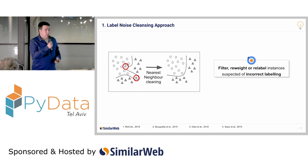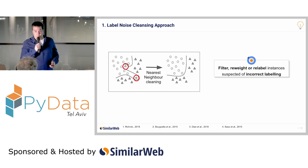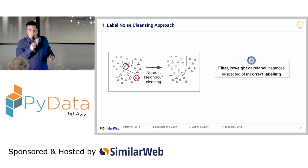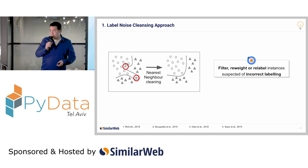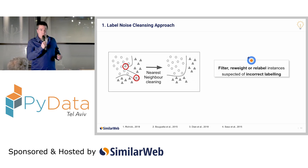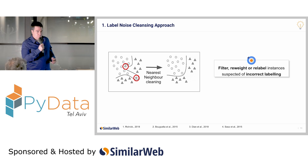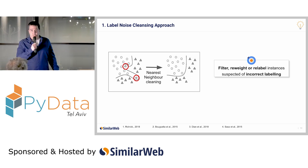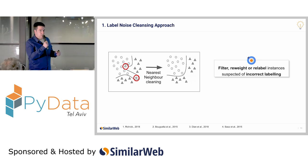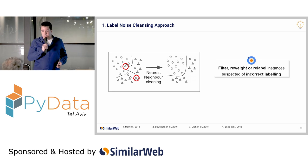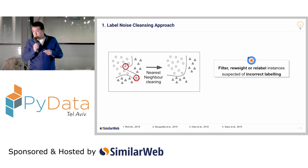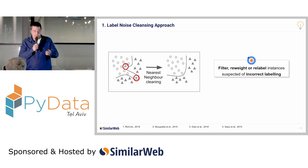The first is the cleansing approach. It is based on detecting instances which are suspected of label noise. Once these instances are detected, you can either filter them out, re-weight them, or re-label them based on the label the model thinks is correct. The detection can be done using scoring methods also used in anomaly detection or outlier detection, like the nearest-neighbor approach on screen, where we filter out instances if their class does not agree with the majority class of nearby instances in the feature space. Unfortunately, these methods are sometimes unable to differentiate between mislabeled instances and hard-to-classify instances, and they tend to filter out instances from minority classes, making classification even harder.